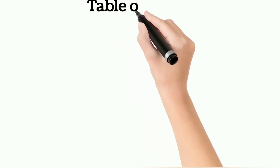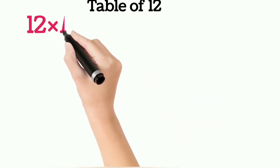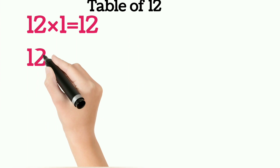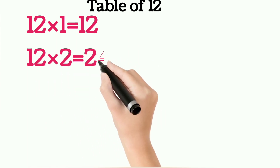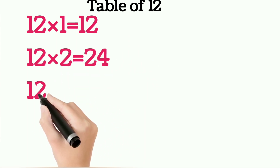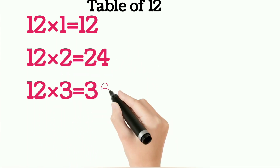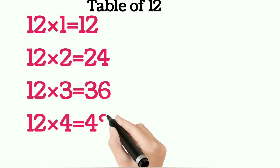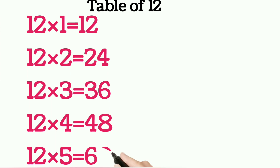Table of Twelve. Twelve ones are twelve, twelve twos are twenty-four, twelve threes are thirty-six, twelve fours are forty-eight, twelve fives are sixty.